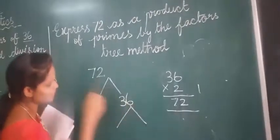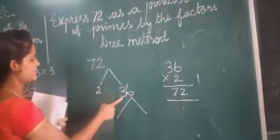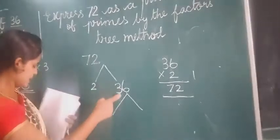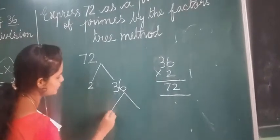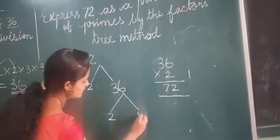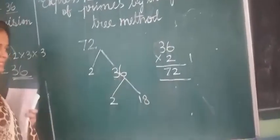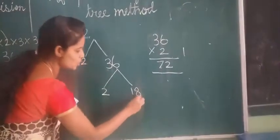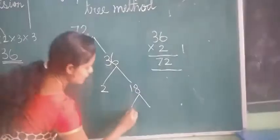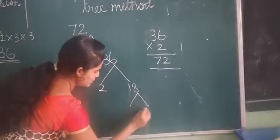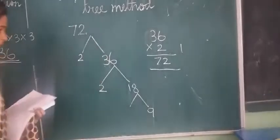Now, again keep going. 36. Now, how many 2's are in 36? As I have told you, you already know, right? Second table. 2 18s are 36. Now, further we will go. How many 2's are there in 18? 9 2's are 18, right?